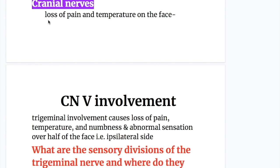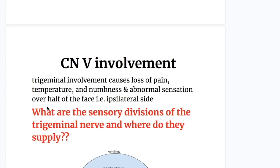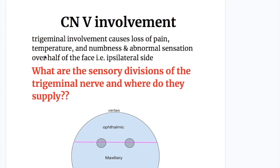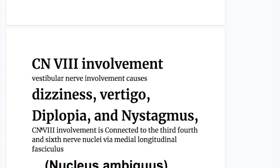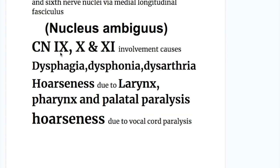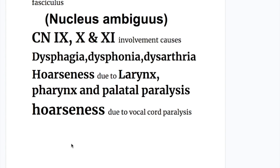Cranial nerve involvement includes five, eight, and the nucleus ambiguus. Involvement of the trigeminal nerve (cranial nerve five) causes loss of pain, temperature, numbness, and abnormal sensation over half of the face on the ipsilateral side. Cranial nerve eight — the vestibulocochlear nerve — causes dizziness, vertigo, diplopia, and nystagmus; it is connected to cranial nuclei three, four, and six via the medial longitudinal fasciculus. The nucleus ambiguus — cranial nerves nine, ten, and eleven — causes dysphagia, dysphonia, dysarthria, and hoarseness due to laryngeal, pharyngeal, palatal, and vocal cord paralysis.